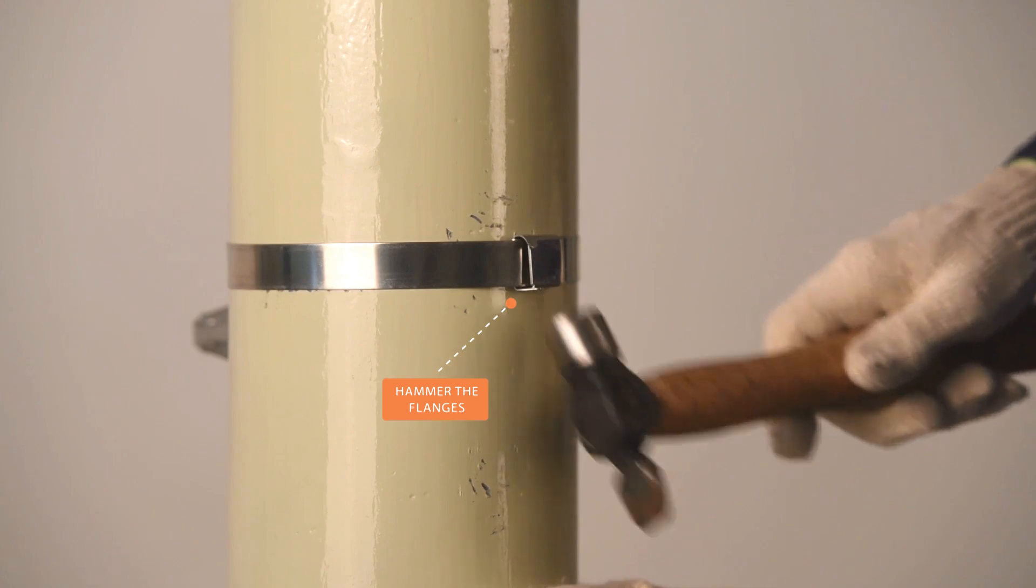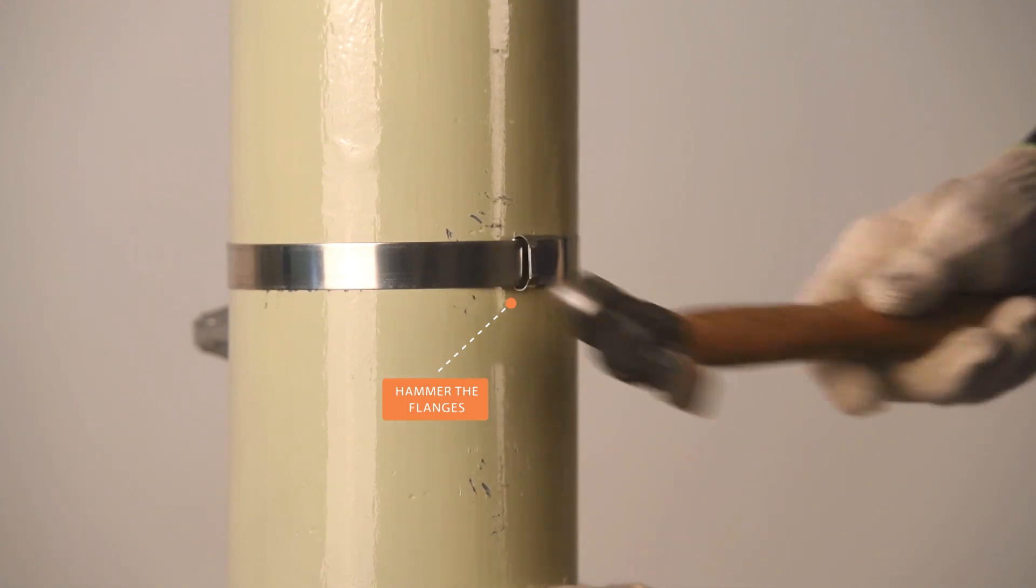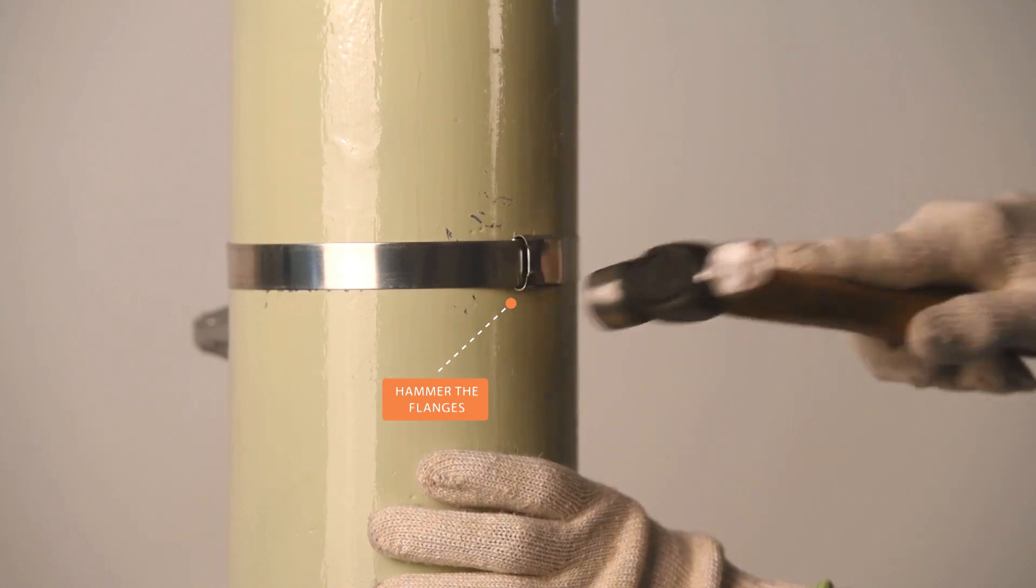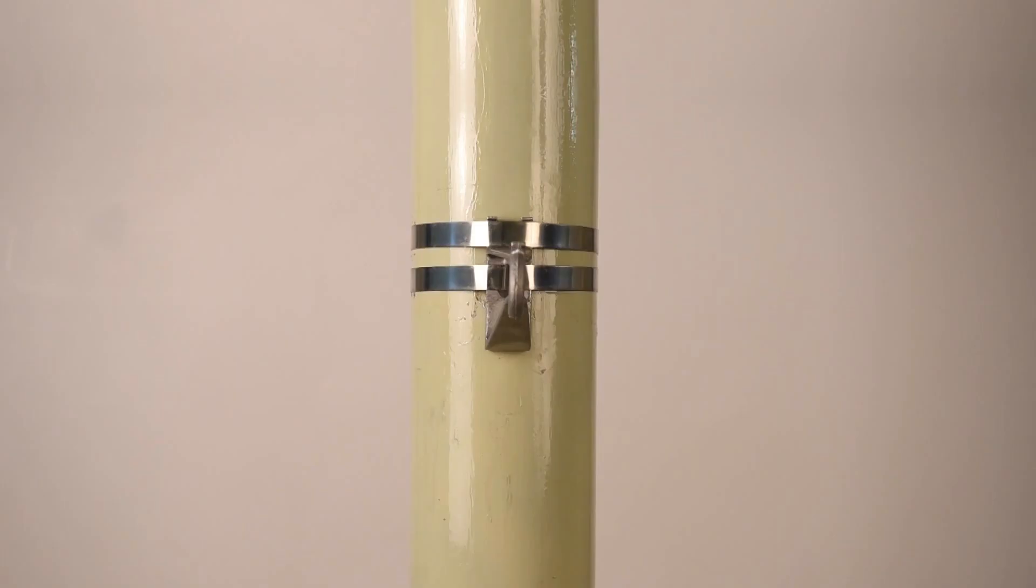Now hammer to bend the straight flanges of the buckle. Using a similar method, fix the second strap. The bracket has now been mounted.